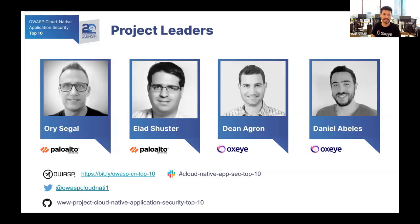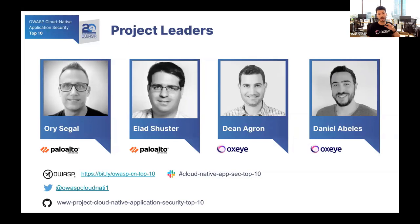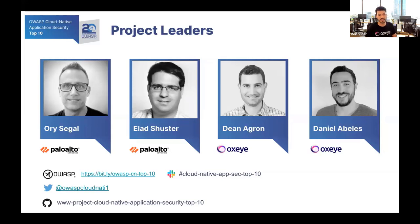On the Oxlite side, we have Dean Agron, the CEO of Oxlite, who brings his experience from Checkpoint and Imperva. And the last one is Daniel Abeles, the head of research at Oxlite, who prior to that was a senior security research team leader at Akamai. The project is available in OWASP Slack in a channel called Cloud Native AppSec Top 10, on our Twitter, and in our GitHub project. We are looking for contributors who will help us build a major project, and we won't be able to achieve that without you. We will touch base again at the end of the presentation on how you can help.